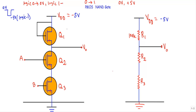To specify logic one, we will apply minus five volts. If I have to apply logic one at input terminal A, I will take a voltage source and connect the negative terminal at A and the positive terminal at the ground terminal. That will give us minus five volts, or logic one, at that terminal. A negative pulse whose zero volts indicates logic zero and minus five volts indicates logic one.